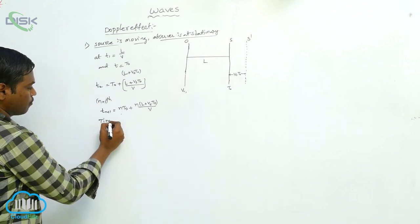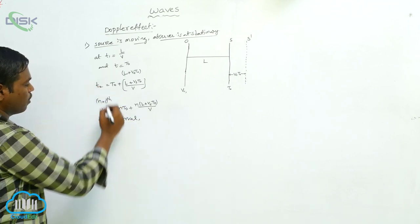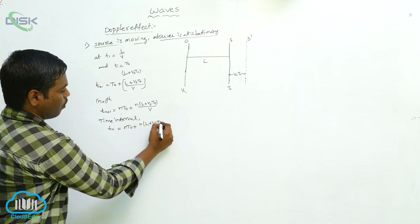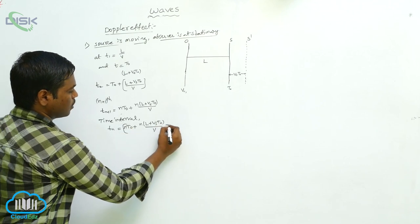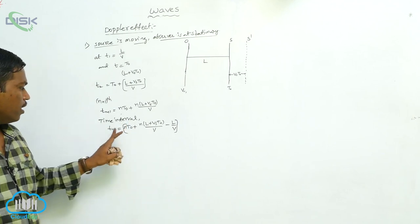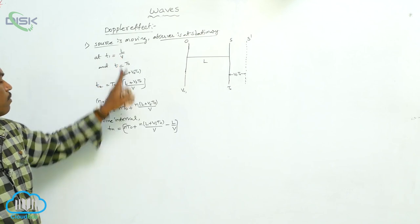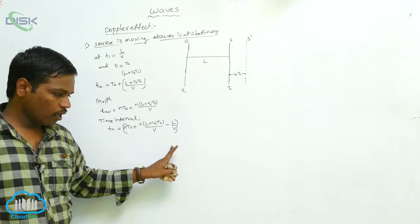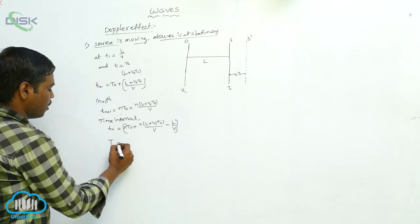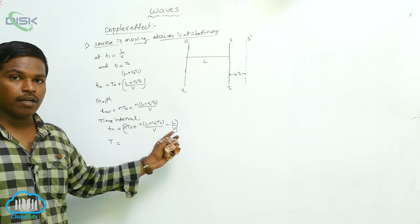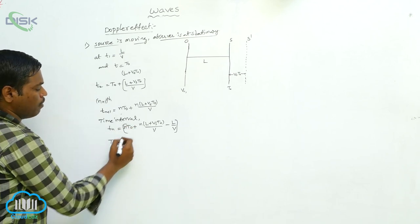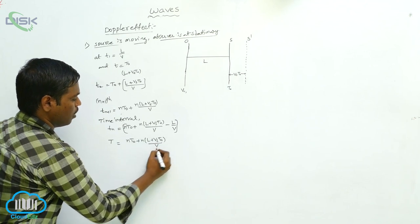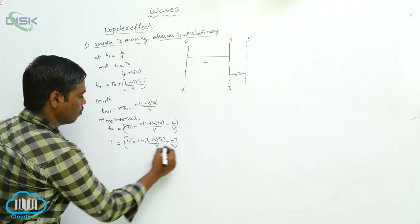The time interval Tn is equal to Tn+1 minus T1, giving Tn equals n·T0 plus n·(L plus Vs·T0) divided by V, minus L divided by V. The time period T is found by dividing this time interval by n, the number of crests: T equals n·T0 plus n·(L plus Vs·T0) divided by V, minus L divided by V, all divided by n.